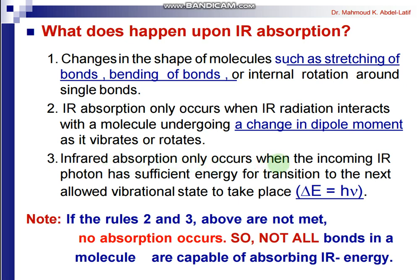If the molecule changes according to its motion and there is a change in the dipole moment, it will interact with IR light, and this mode of vibration is IR active. Infrared absorption only happens when the incoming IR photon has sufficient energy for the transition — meaning the IR energy must equal the difference between energy levels. If there is no change in dipole moment and the energy is lower than the energy level difference, no interaction occurs between the IR light and the matter.